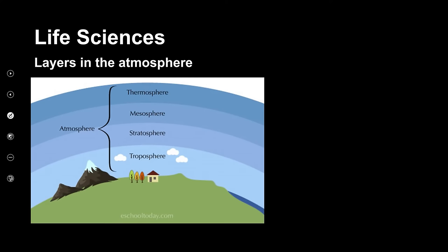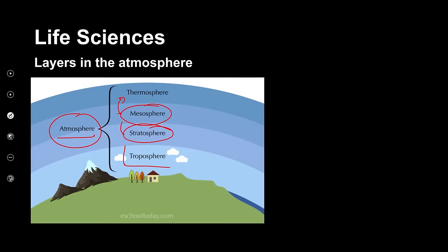When we look at the atmosphere, it's important to recognize that it is made up of different layers. We have a layer called the troposphere, which is then surrounded by the stratosphere, which in turn is enclosed on the external surface by the mesosphere. And then right on the outside, we have the thermosphere. These various levels are the levels of gases that make up the atmosphere.